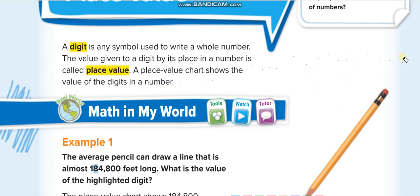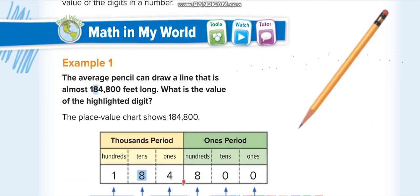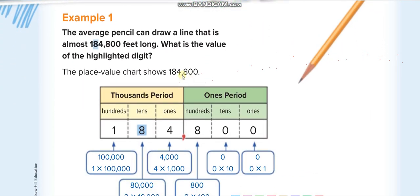After every three digits we put a comma. Do you know why? We use commas to separate the periods. In every period we have ones, tens, and hundreds — three digits. Once those three digits are finished, it means we are moving to the next period, so we use a comma to separate the periods.